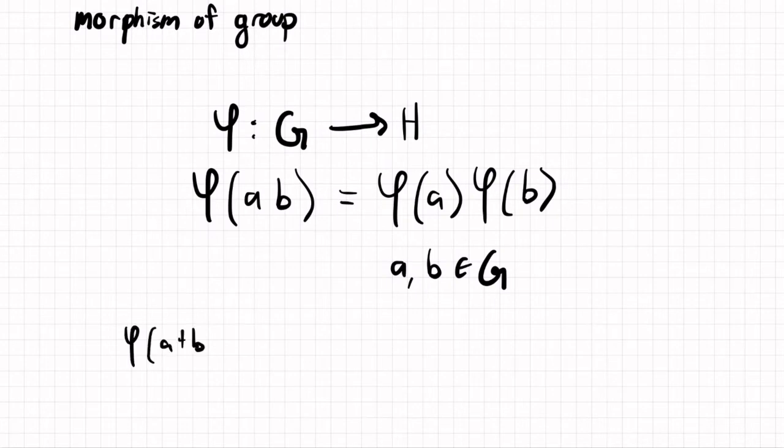You'd have something like phi of A plus B equals phi of A plus phi of B. So that would be additive.